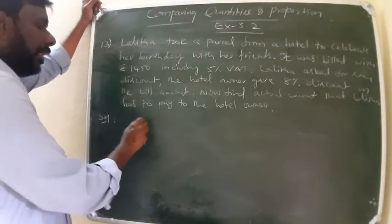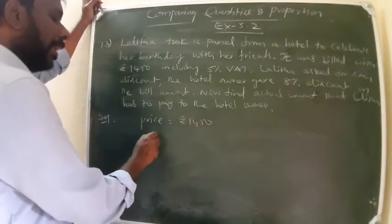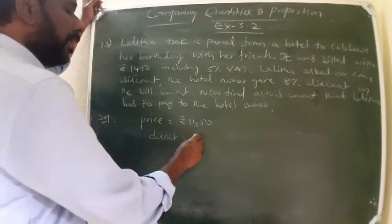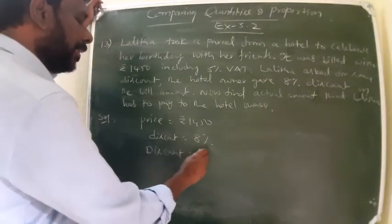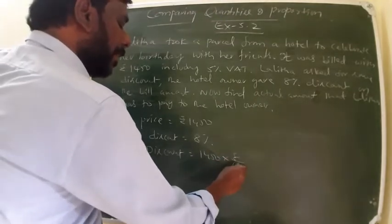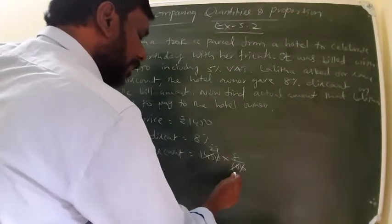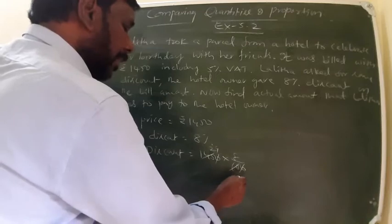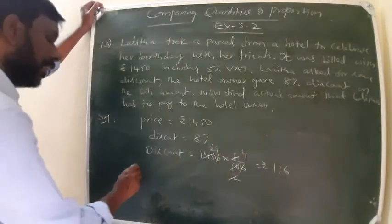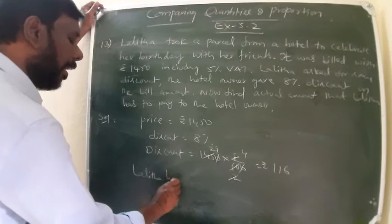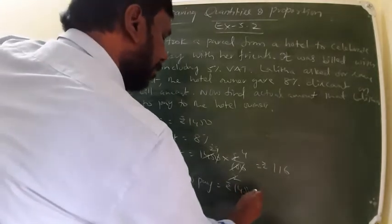So here the price is equal to Rs. 1450, discount is 8%. The actual discount is 8% of Rs. 1450, which equals Rs. 116. So Rs. 1450 minus Rs. 116.